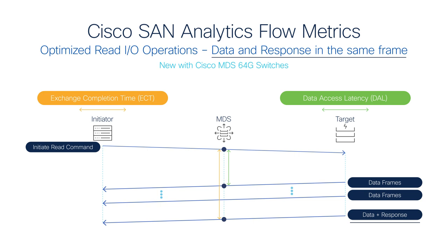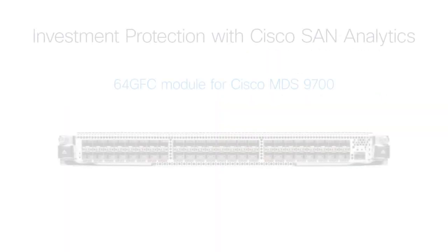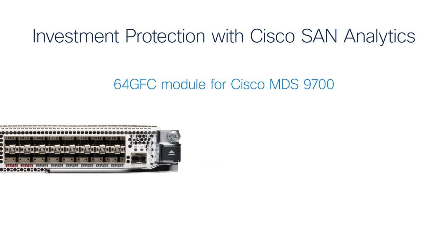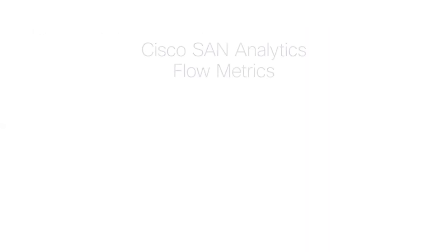The MDS 64-gigabit switches also collect metrics for write I/O operations that use first burst, eliminating the need for transfer ready, and for optimized read I/O operations that selectively merge data and response within the same frame. Finally, the 64-gigabit module for MDS 9700 directors has a 1-gigabit Ethernet port for exporting metrics at high frequency. This port is not enabled yet, as most problems can be solved via the management port, but in the future, high-frequency metric export can be enabled by a software-only upgrade — no expensive rip-and-replace required.